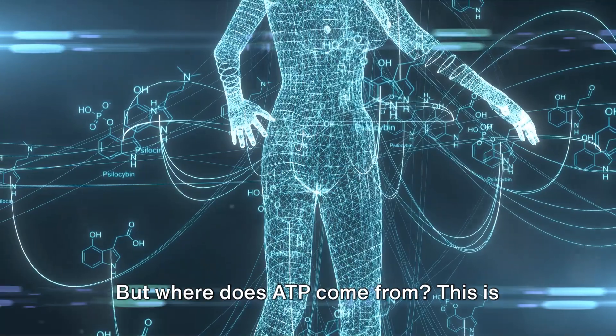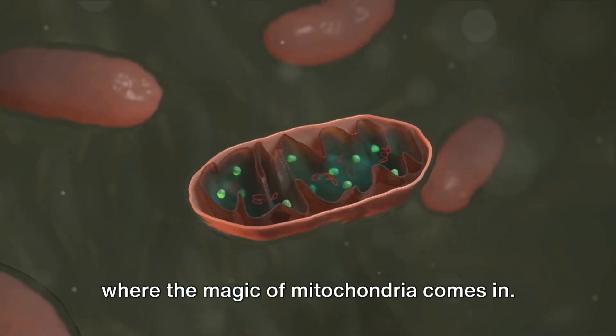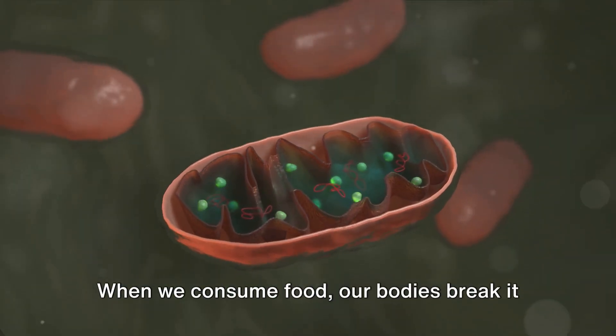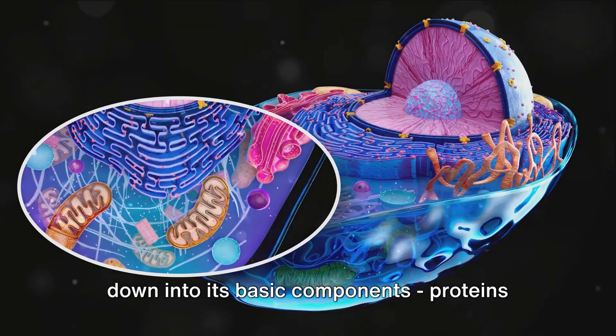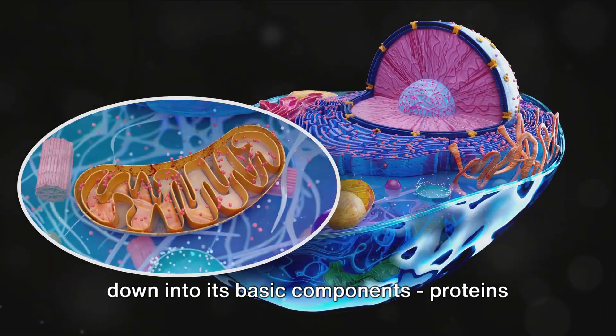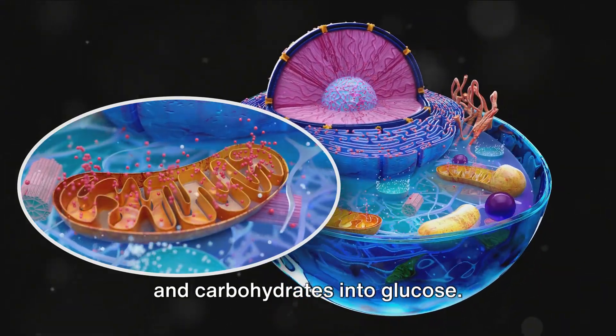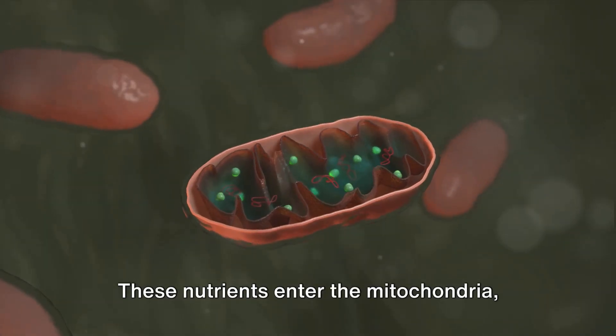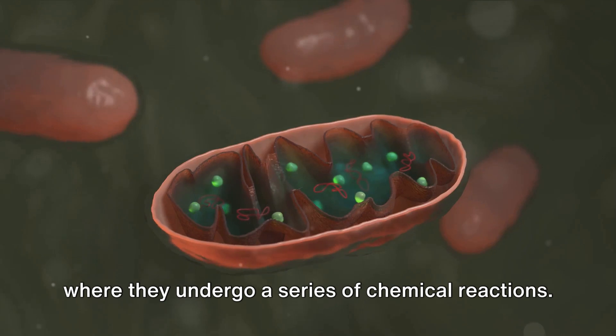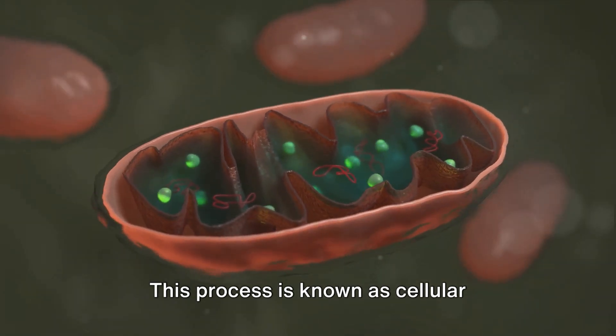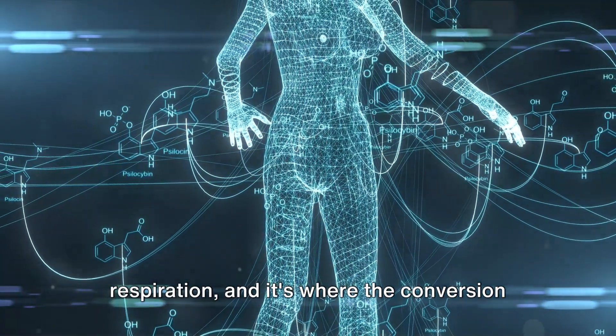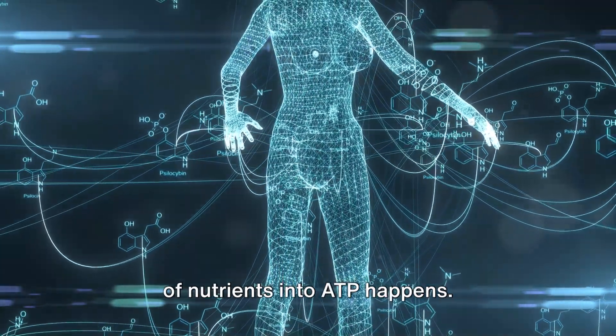But where does ATP come from? This is where the magic of mitochondria comes in. When we consume food, our bodies break it down into its basic components: proteins into amino acids, fats into fatty acids, and carbohydrates into glucose. These nutrients enter the mitochondria, where they undergo a series of chemical reactions. This process is known as cellular respiration, and it's where the conversion of nutrients into ATP happens.